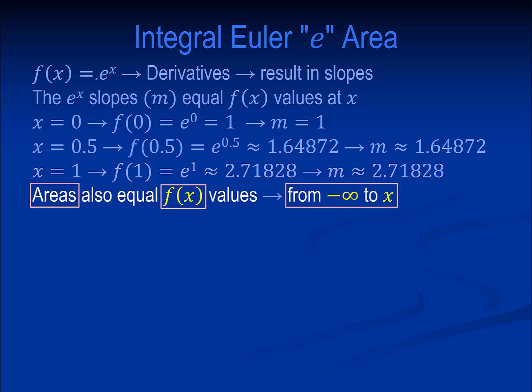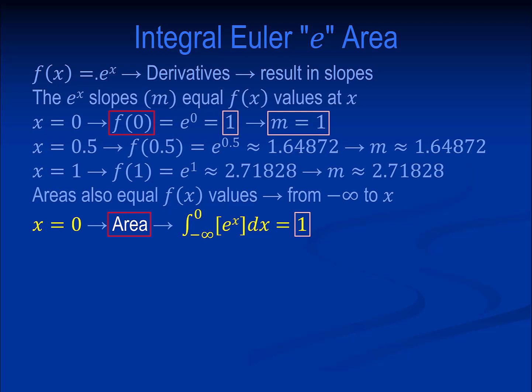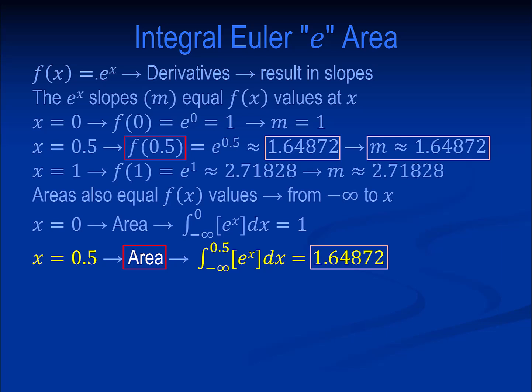Areas also equal f of x values from minus infinity to x. When x equals 0, the area integral from minus infinity to 0 equals 1, which is the same as f of 0 and the slope of f of 0. When x equals 0.5, the area integral from minus infinity to 0.5 equals approximately 1.64872, which is the same as f of 0.5 and the slope of f of 0.5.